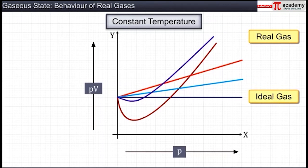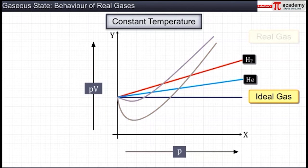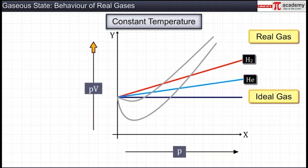When we draw a plot between PV and P for these gases, we get two types of curves. The curves for hydrogen and helium, as shown, lie above the ideal gas curve, and these two gases show a continuous increase in PV with the increase in pressure.